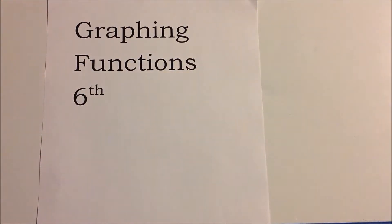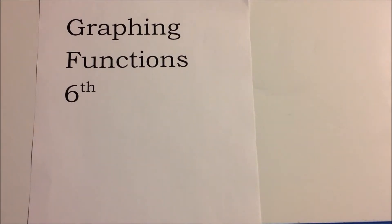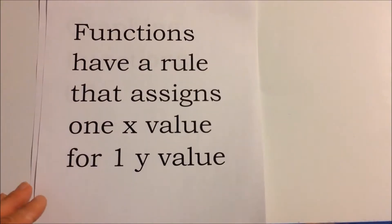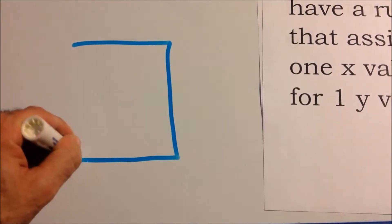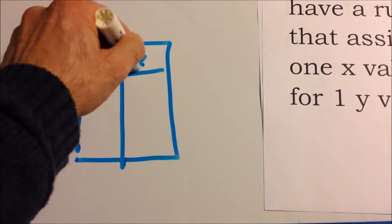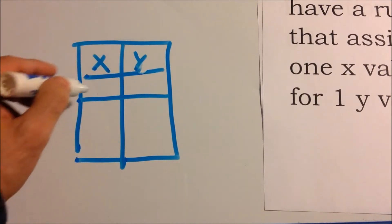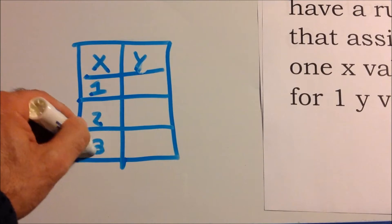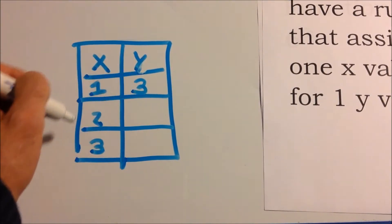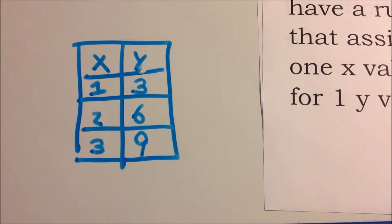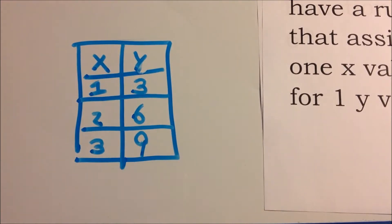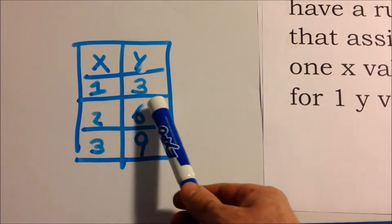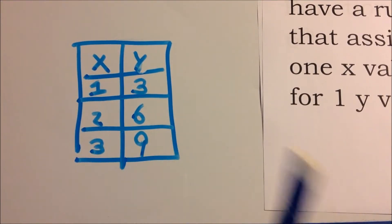Here's our video on graphing functions. Functions have a rule — they assign one x value for one y value. Here's an example: we have x values of 1, 2, and 3 in a box, and we find a rule to get y. The rule here is to multiply by three: 3 times 1 is 3, 3 times 2 is 6, and 3 times 3 is 9. So the function rule is multiply x by three.